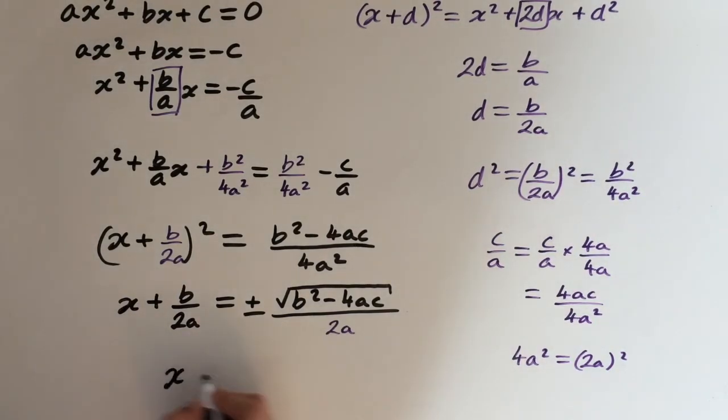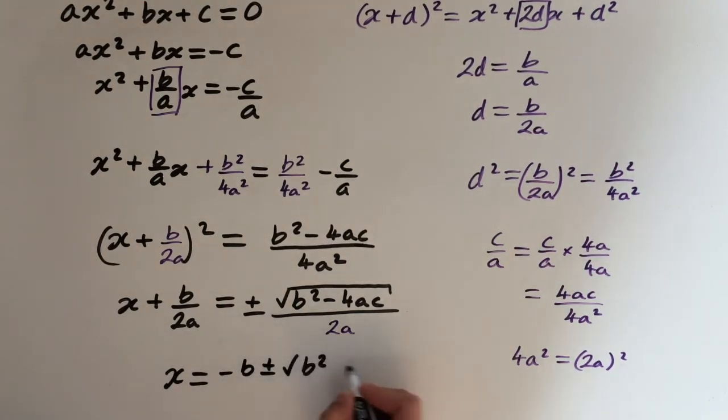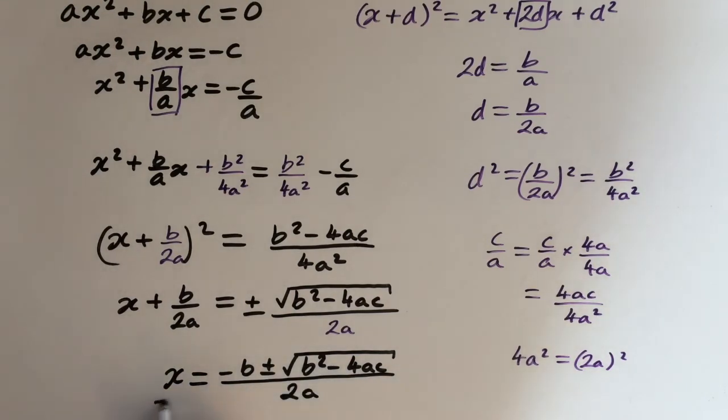So this gives us x equals minus b plus or minus square root b² minus 4ac all over 2a. And there you go, the quadratic formula. See you next time.